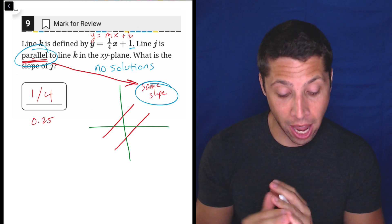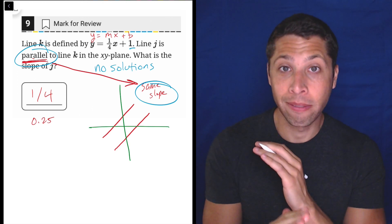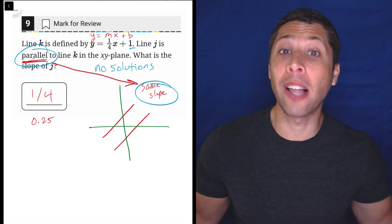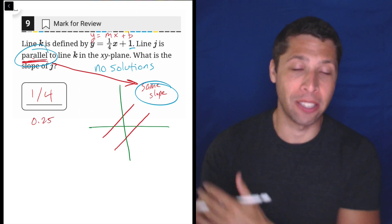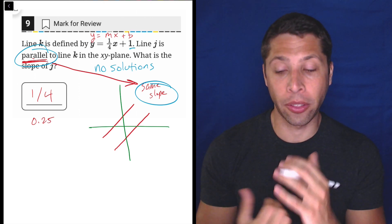So the b is gonna be different. I don't know what the y-intercept of J is, but I know for a fact that it's not one. That's the only thing I know. Otherwise they would be the same line and that's a different situation, that's infinitely many solutions.